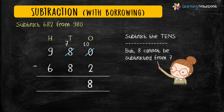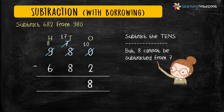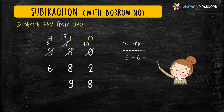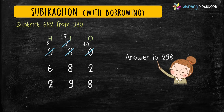Now subtract the digits at tens place, but 8 is a bigger number than 7, so 8 cannot be subtracted from 7. We borrow from hundreds place; 9 becomes 8 and 7 becomes 17. We subtract 8 from 17 and get 9. Finally subtract hundreds place: 8 minus 6 equals 2. We get the answer 298.